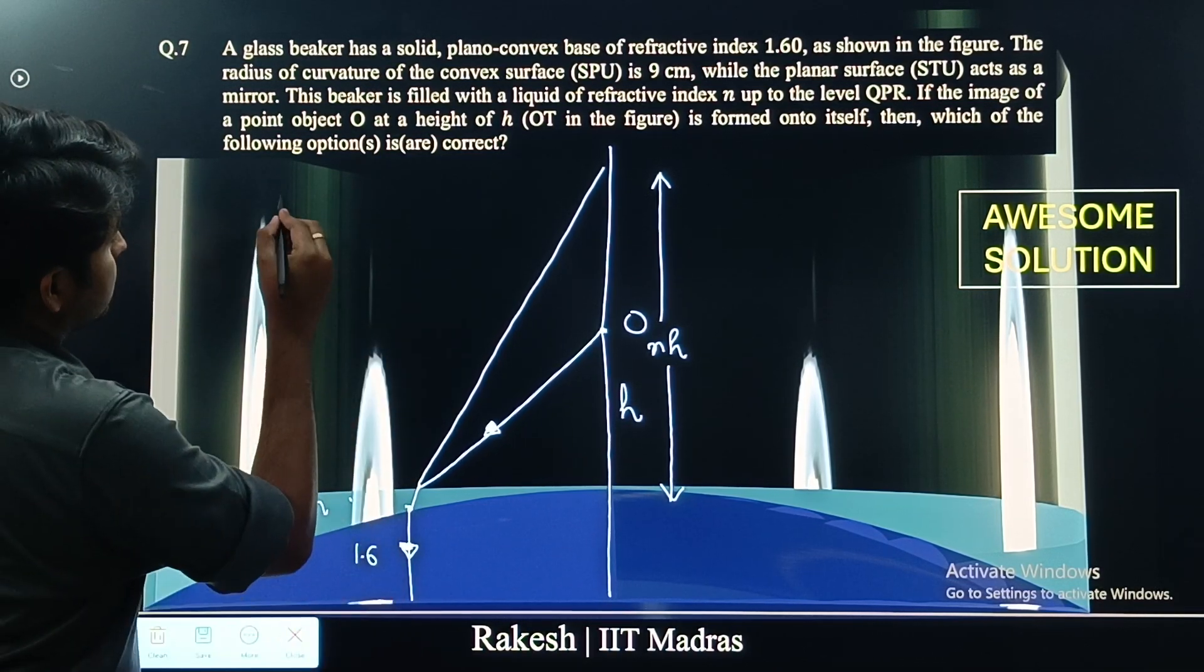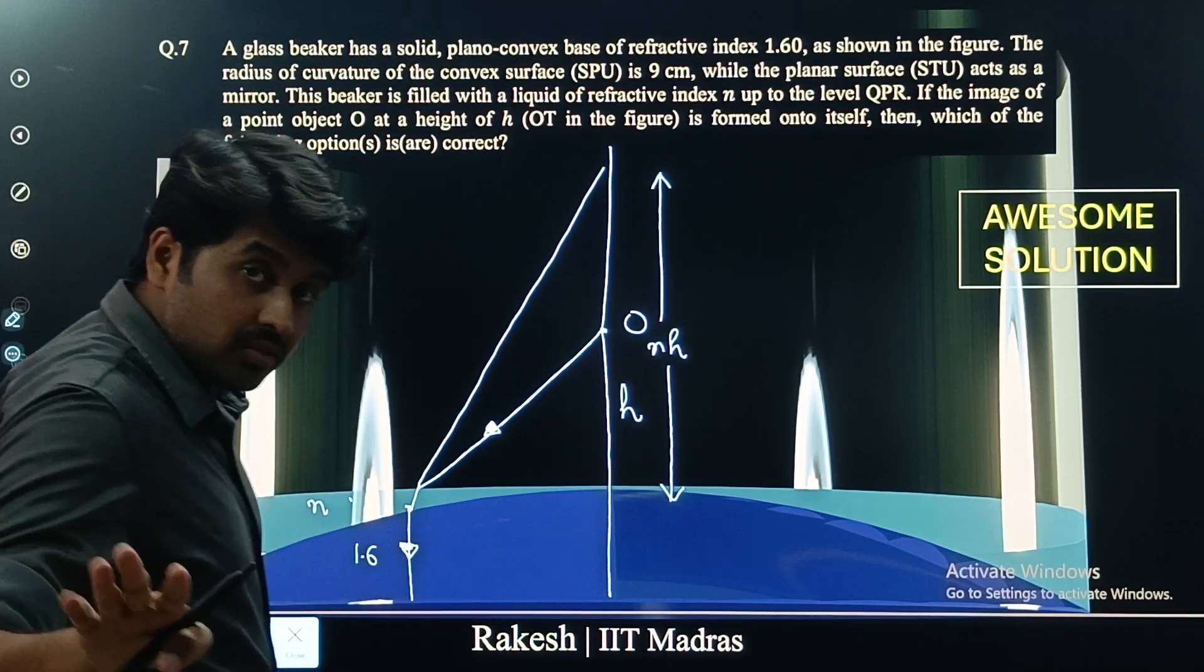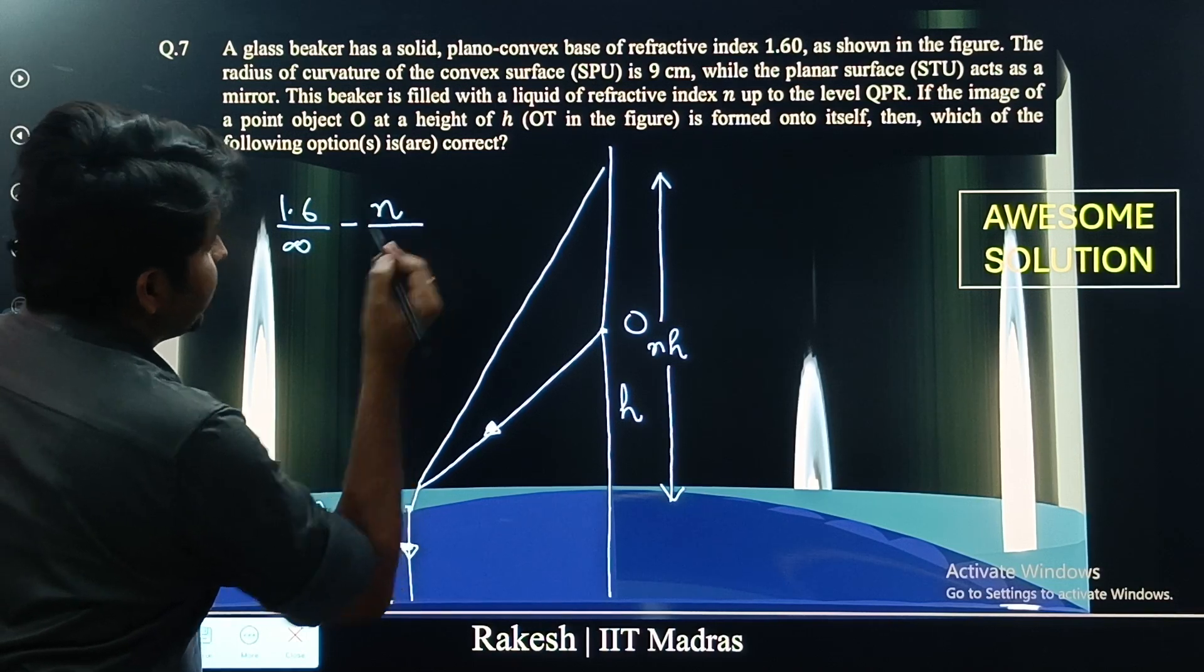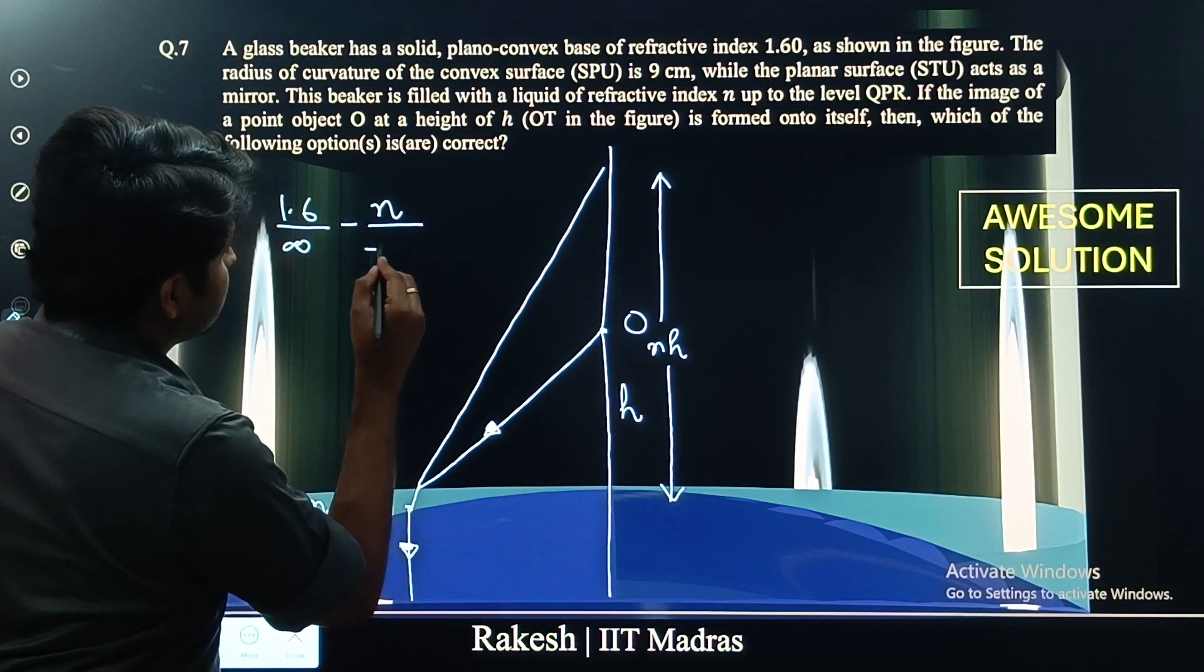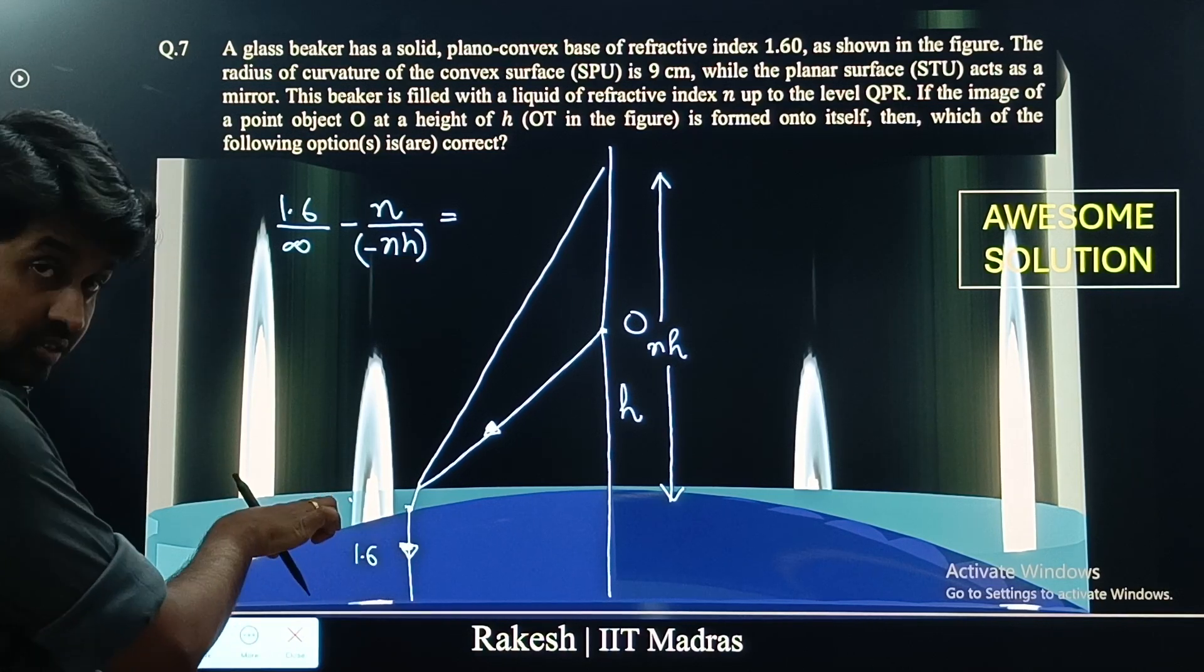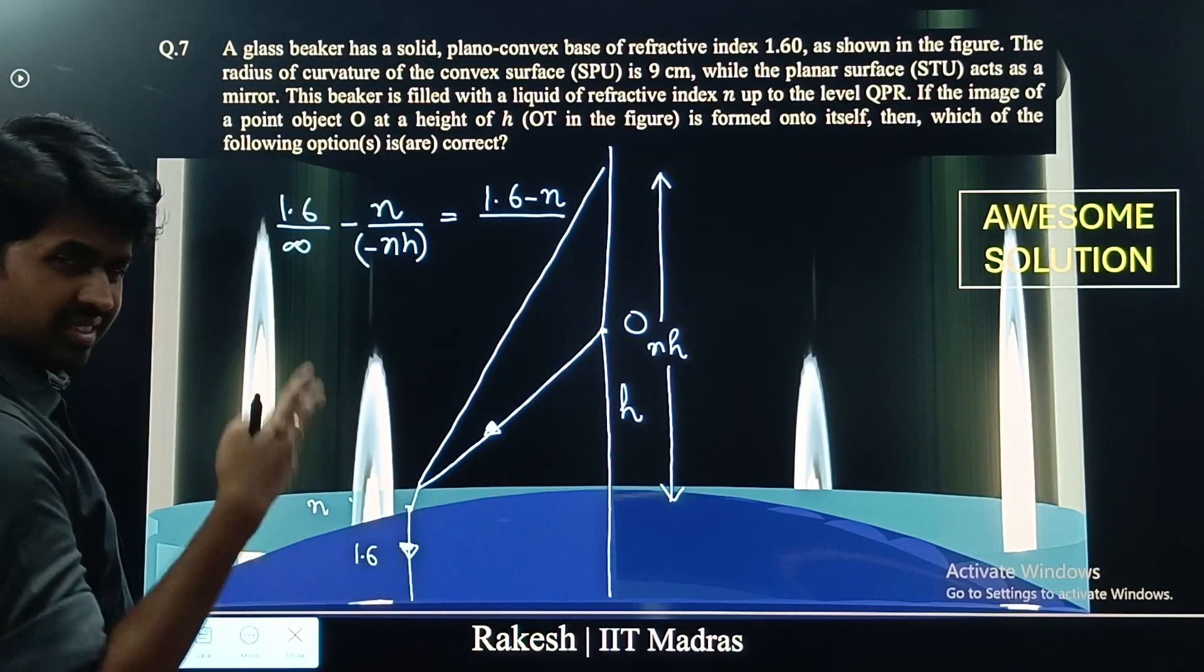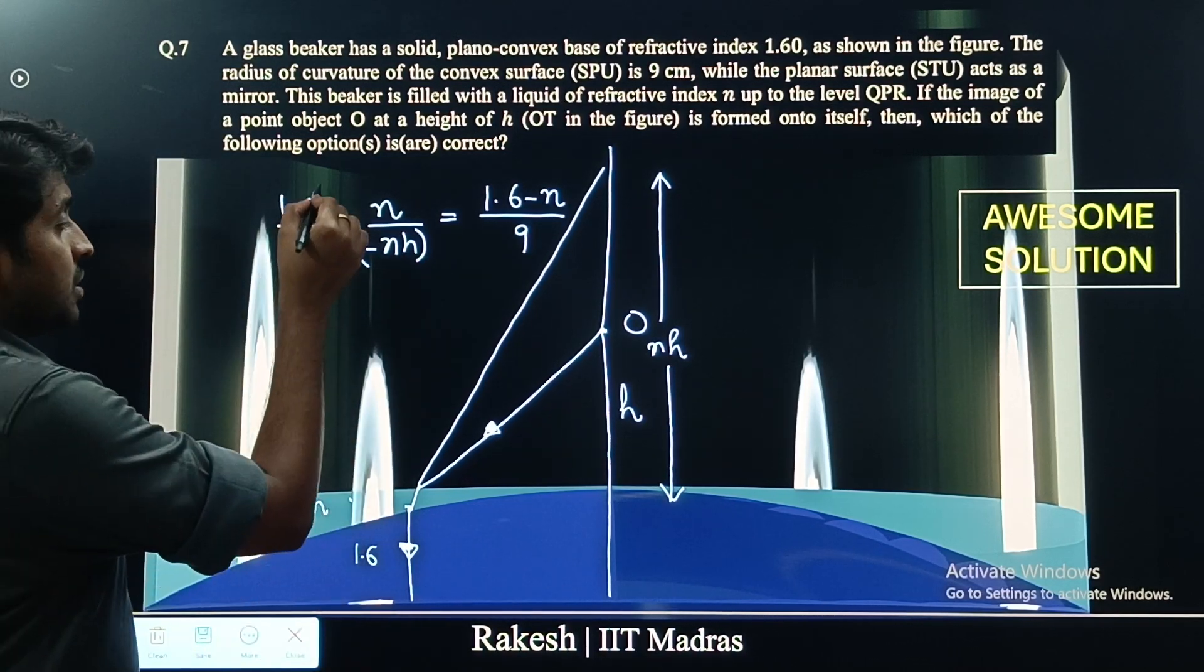μ₂ by V, that is 1.6 by infinity because this is a straight line parallel to principal axis, which means it is forming at infinity, minus μ₁ is n divided by u. What is the object distance? Here it is nh. So minus nh equals μ₂ minus μ₁, that is 1.6 minus n, divided by r. Using sign convention, I will use it as plus 9 centimeters. This becomes 0.